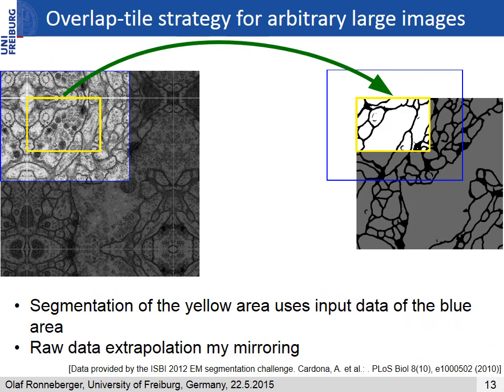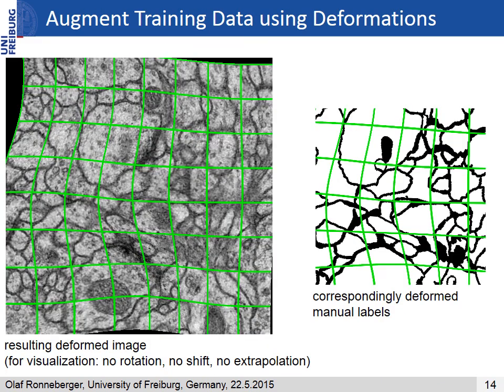The segmentation of the yellow area uses the input data of the blue area. With an overlap tile strategy we can segment arbitrarily large images, and at the border we extrapolate the data by mirroring. The main challenge in biomedical image segmentation is a low number of training data. To teach the network the desired robustness properties, we apply random elastic deformations. The resulting deformed image looks perfectly like an original image — if the green grid lines are removed, the deformed cells cannot be distinguished from real cells.